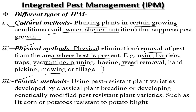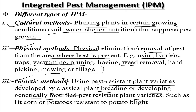The genetic method involves using pest-resistant plant varieties developed by classical plant breeding or by developing genetically modified pest-resistant plant varieties such as Bt corn, Bt cotton, or potato resistant to potato blight. These organisms have their DNA modified so they can resist the action of pests and thrive even in their presence.